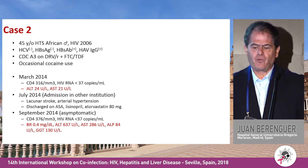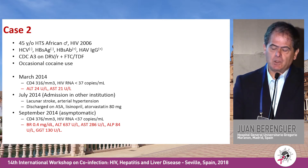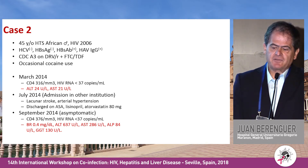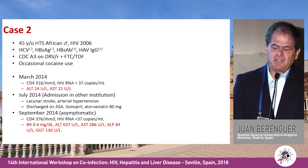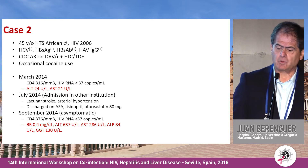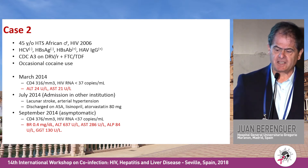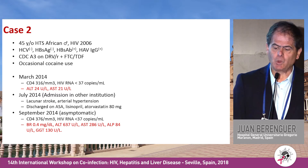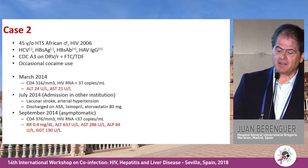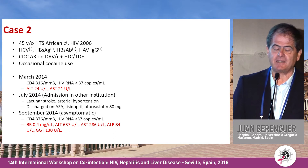Case number two. This is a 45-year-old heterosexual African male diagnosed in 2006. He has negative HCV serology and negative surface antigen, and he had successful vaccinations for hepatitis B and hepatitis A. He's currently on Darunavir, FTC, TDF. Occasionally he used cocaine. On March, his CD4 count was above 300 and HIV viral load fully suppressed, with normal ALT and AST. In July, he was admitted to another institution due to a lacunar stroke and arterial hypertension, and was discharged on low-dose acetylsalicylic acid, lisinopril, and atorvastatin 80 milligrams.